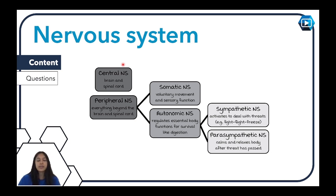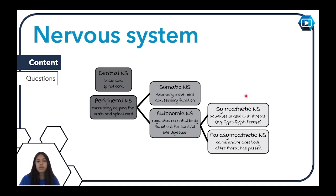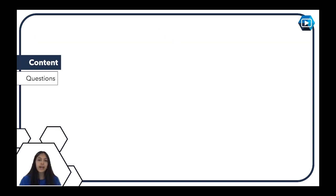Your peripheral nervous system is about actually receiving information and sending it through to the brain via the spinal cord, or sending information out. We then look at the somatic and the autonomic nervous systems. The somatic is associated with voluntary movement and sensory function. The autonomic nervous system is in charge of things you don't consciously think about — things to do with survival like your organs — responding to internal stimuli. It subdivides into the sympathetic and parasympathetic.